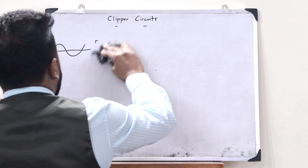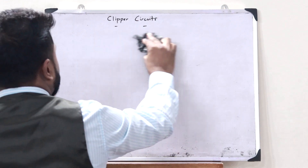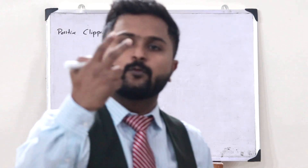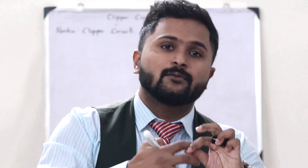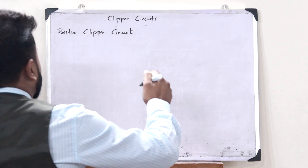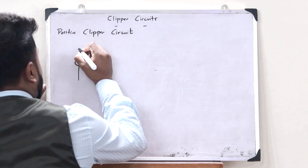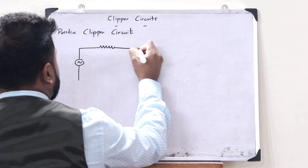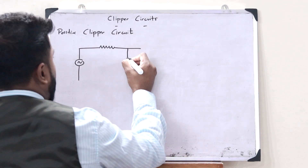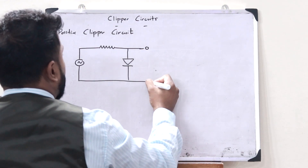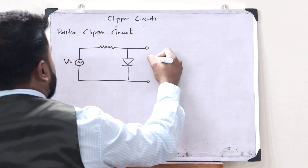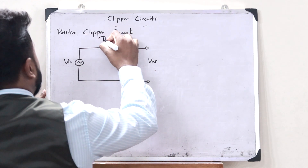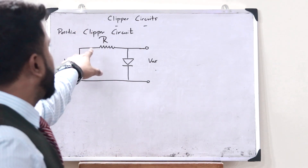So what are these? Let us first see what you refer to as a positive clipper circuit. Every clipper circuit has got two components: a resistor as well as a diode. A positive clipper circuit looks somewhat like this — first we would have a resistor, and then we would have a diode. The output is obtained over here. This is the input and this is the output.